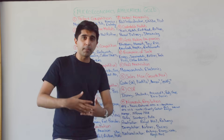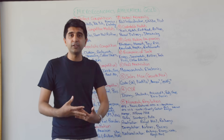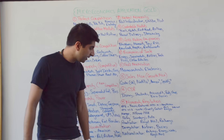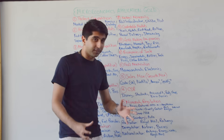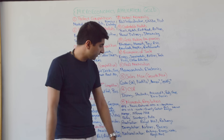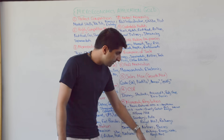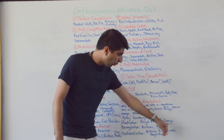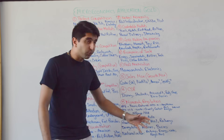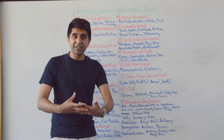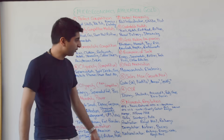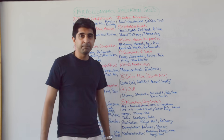Nationalization: proposed nationalizations by Jeremy Corbyn — of rail services, energy markets, water, and Royal Mail to be renationalized as well.